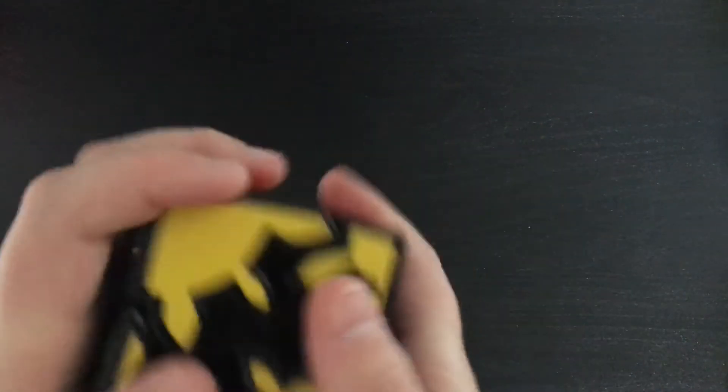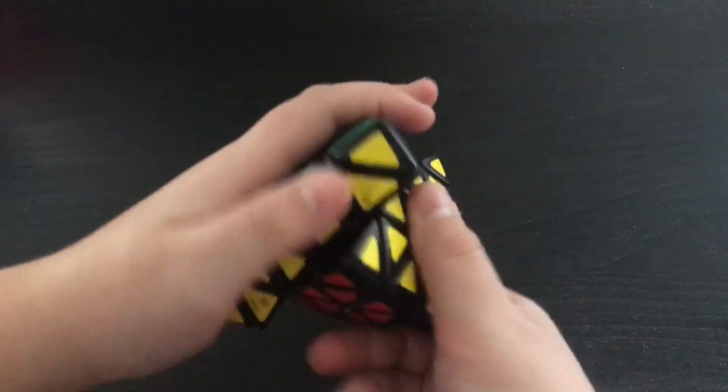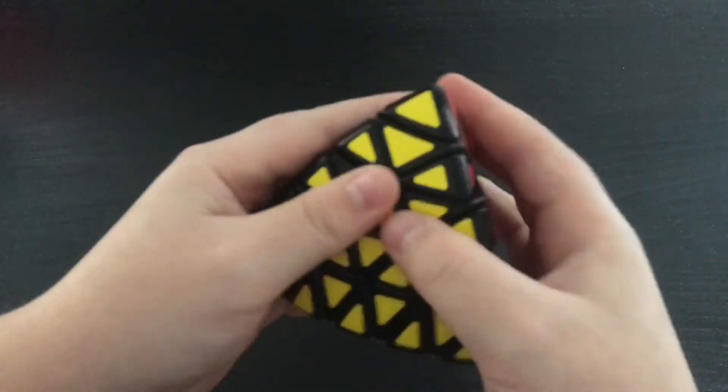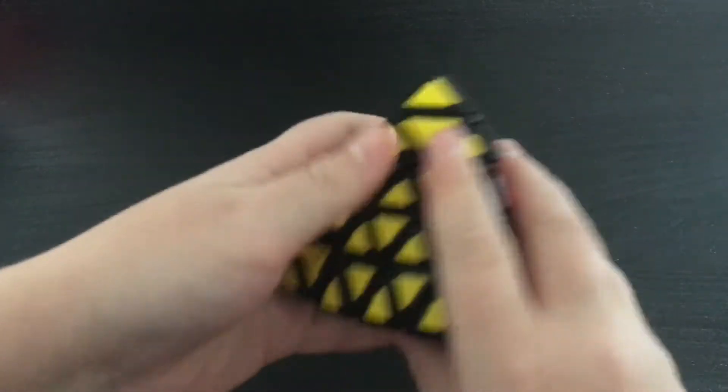A YJ Elephant 2x2. The Gearshift which is basically just a 2x2 gear cube. The Method Professor Pyramix. This was really stiff when I got it and I just put a little bit of lube in it and it actually turns pretty good.